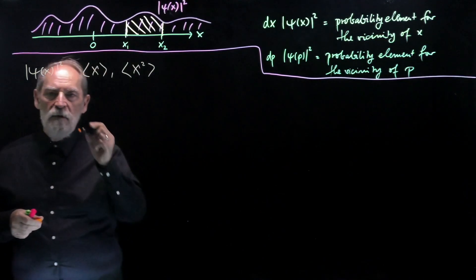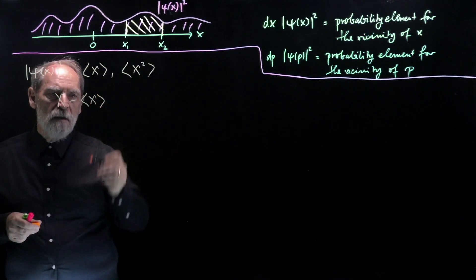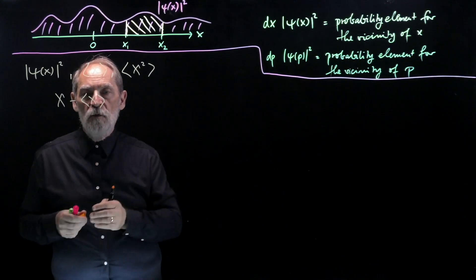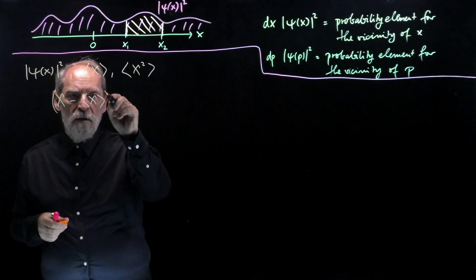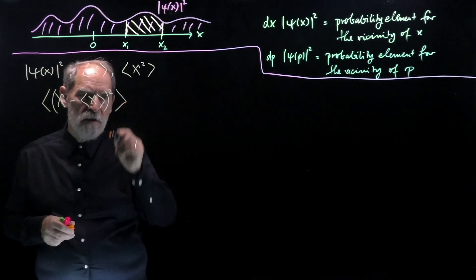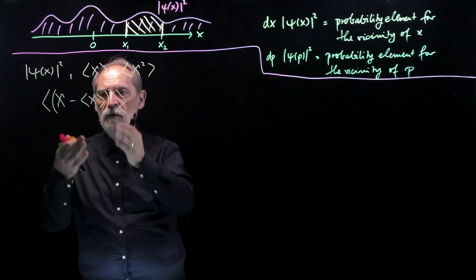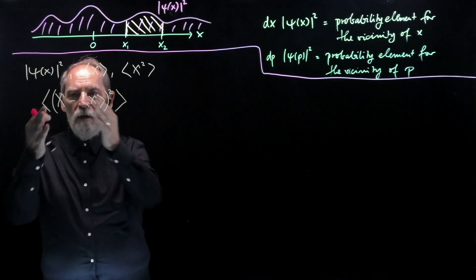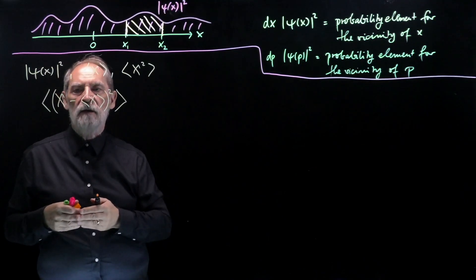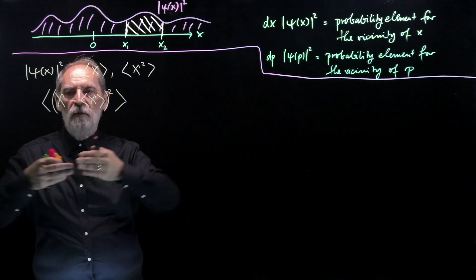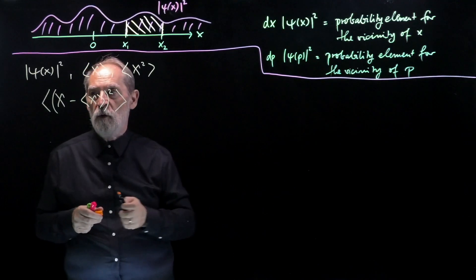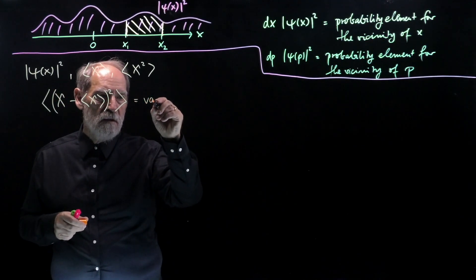If we have x and the mean value of x, and if all the x values are very narrowly distributed around the mean value, then the mean squared distance from the mean value will have an expectation value that is small. We will use this mean squared deviation from the mean value to quantify the uncertainty with which we know x. If we have a broadly distributed distribution, this number will be large; if we have a narrow distribution, this number will be small. This is what is called the variance of x.